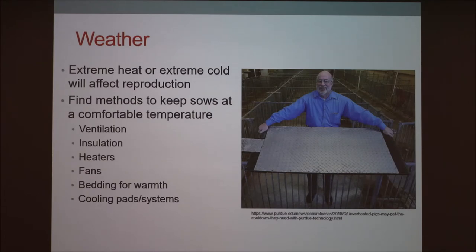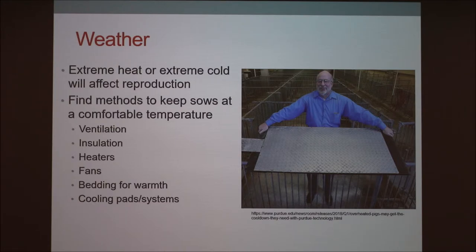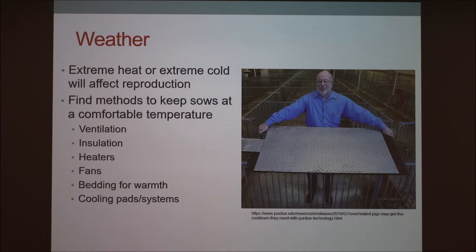Weather is another factor. Depending on your climate, extreme heat or extreme cold will affect reproduction. It also depends on your housing system. If your sows are in a barn with heat, cooling, and good ventilation, there's not a lot to worry about as long as you keep them at a comfortable temperature. But if you have them outside in hoop buildings or saddle lots, you're going to have to watch the temperature. Make sure you have adequate ventilation, insulation, bedding for warmth, cooling pads, or sprinklers to keep them at a good temperature.